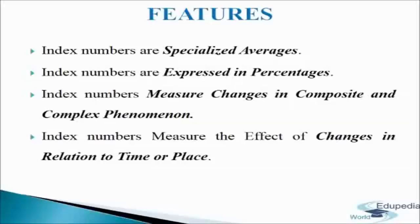For example, by constructing a consumer price index, the various goods and services like food, clothing, electricity, fuel, etc., expressed in different units, can be averaged using the technique of index numbers. The second feature is that index numbers are expressed in percentages. Index numbers measure relative percentage change in the variable over time with reference to some base year. The changes in magnitude are expressed in terms of percentage, which are independent of the units of measurement, facilitating comparison. However, the percentage sign is never used. For example, the index of industrial production is 128 in 1997 compared to 1996, meaning there is a net increase of 28%.